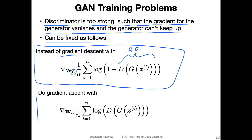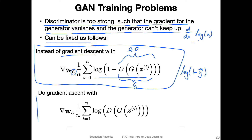Let me outline the problem with the gradient. We have log(1 − ŷ). What is the derivative of that? Using the chain rule — you know that the derivative of log(x) is 1/x — we apply the chain rule: the outer derivative times the inner derivative. The inner derivative of (1 − ŷ) with respect to ŷ is −1.